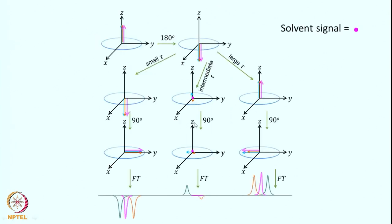Let us look at how this works with a vector diagram. Here the magnetization is represented by arrows. Initially at equilibrium all the magnetization is along the z-axis; the pink one represents water and the others are sample signals. For schematic purposes they are drawn the same height, although the pink arrow actually has to be very large compared to the others. When you apply a 180-degree pulse, the entire magnetization rotates from the z-axis to the minus z-axis. This is a non-equilibrium state; after the 180-degree pulse the system relaxes back to the z-axis, determined by the spin-lattice relaxation times of the individual spins — different ones relax differently.